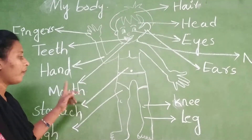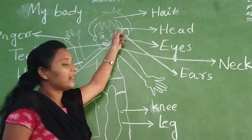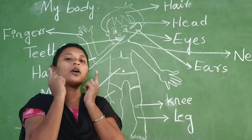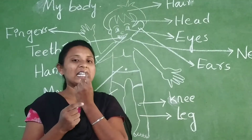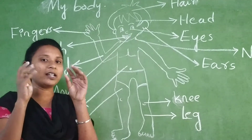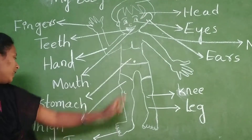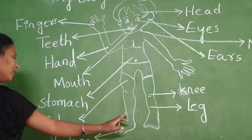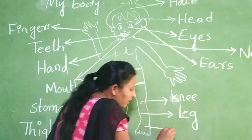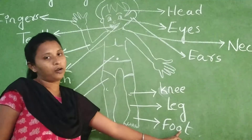Now we will review the body parts. Head, eyes, nose, mouth, teeth, ears, neck, fingers, hands, stomach, thigh, toes, knee, leg. And this is foot. What is that, children? Foot.